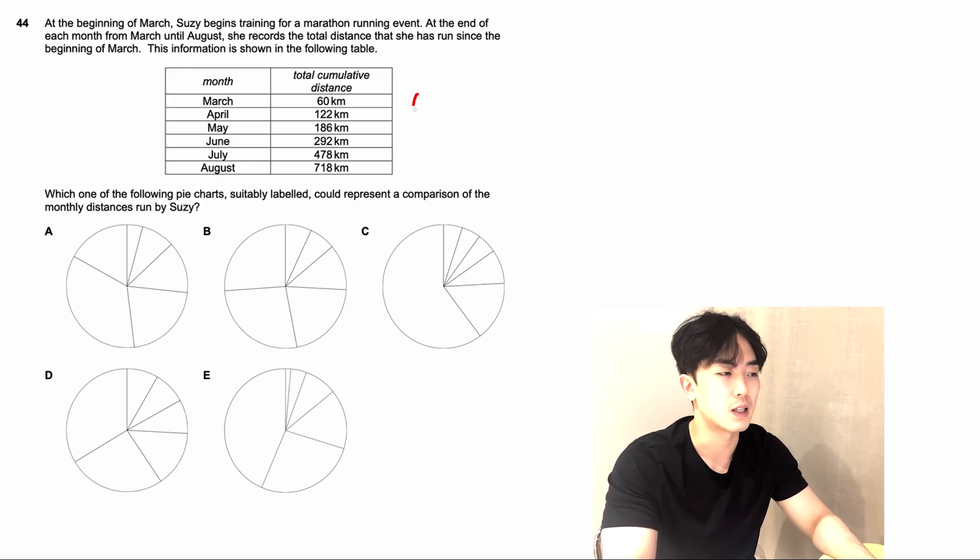March is 60. April is 122 minus 60. It's just the differences of each one. Let's write them down correctly: 60, 62, 186 minus 122 is 64, then 106, 186, and 240. So these are the distances that she travels in each month. As you can see, it gets progressively further, and the first three months, they are roughly similar distances she ran.